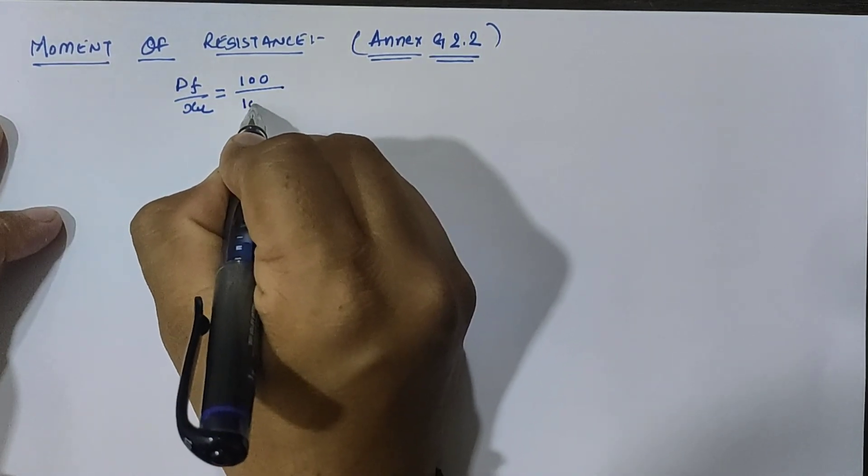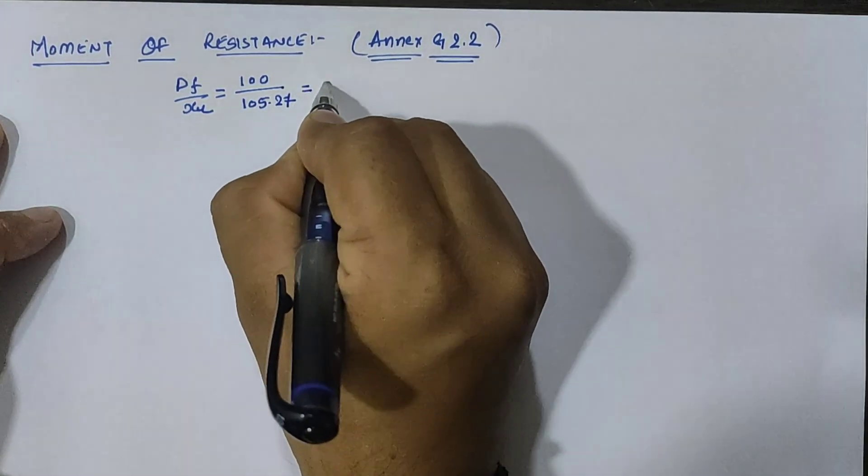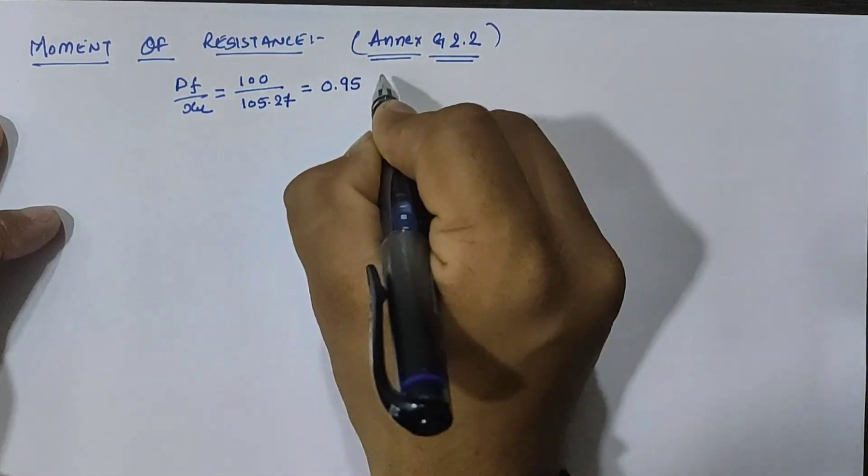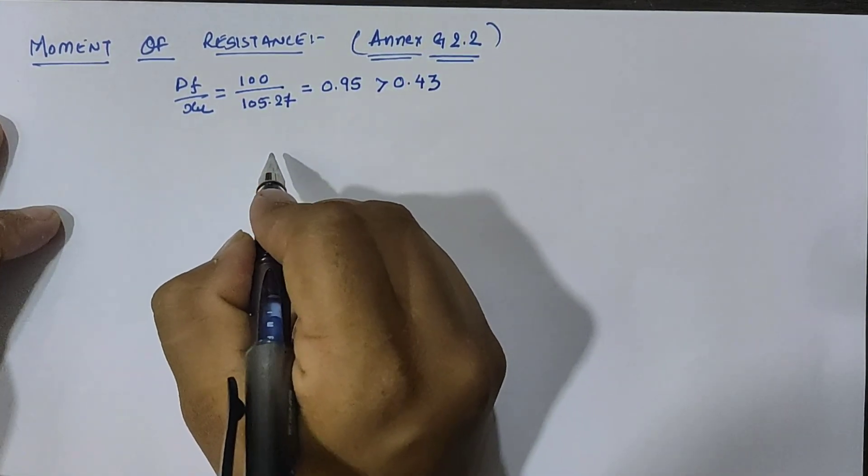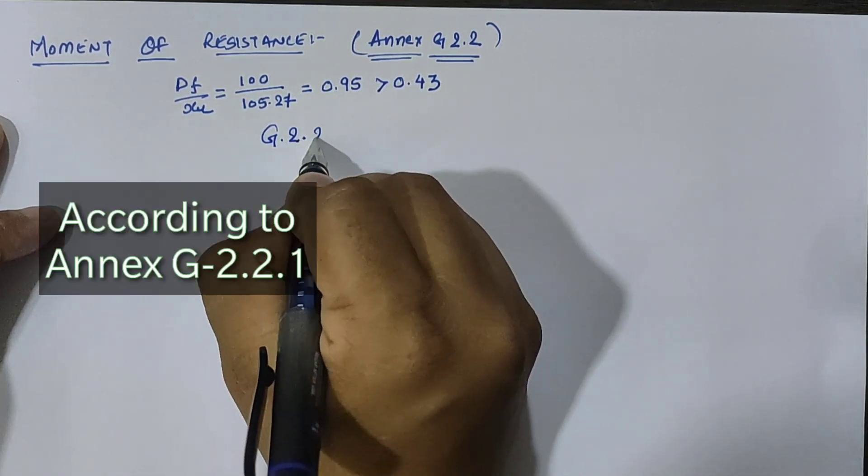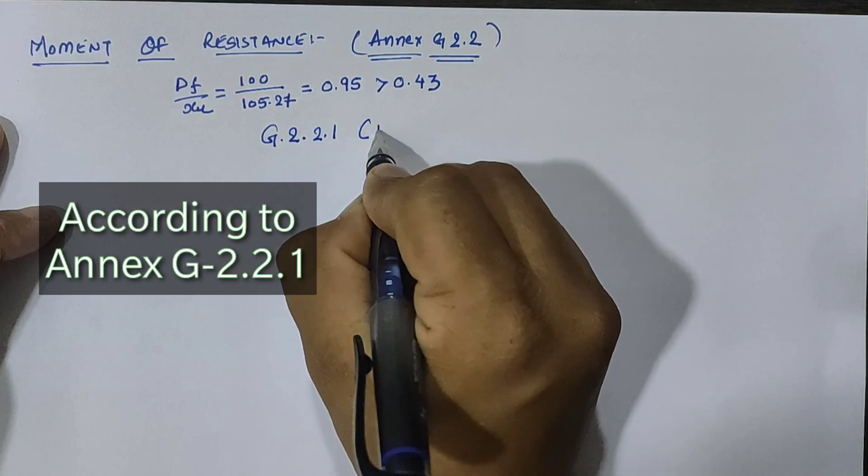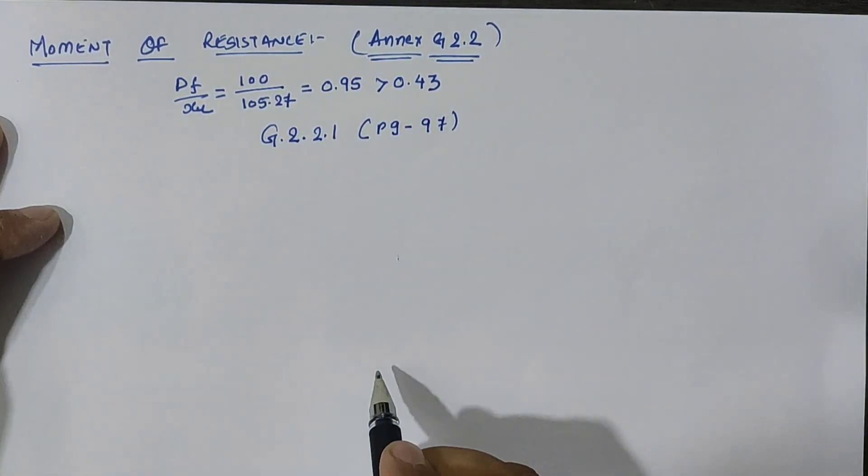Our value is 0.95, which is greater than 0.43, so we have to calculate moment of resistance according to G.2.2.1 at page number 97.